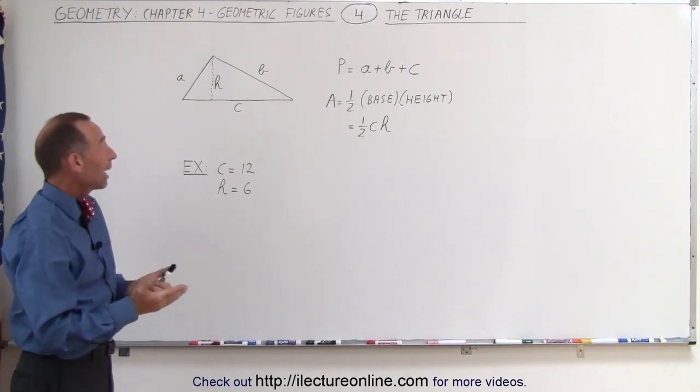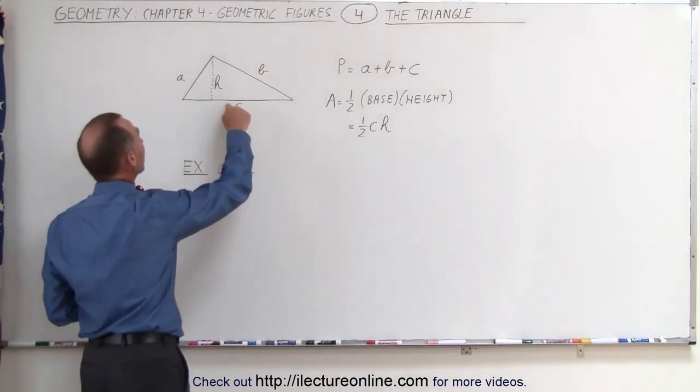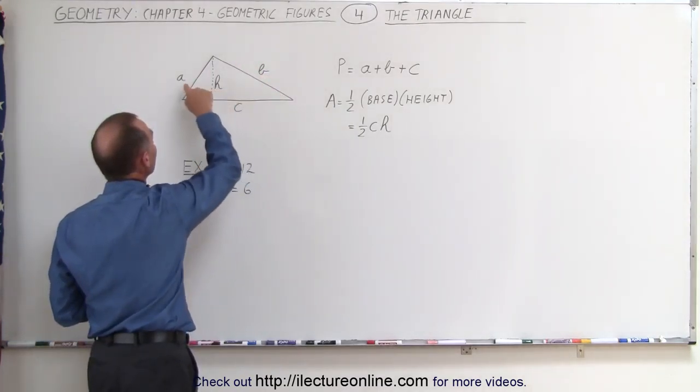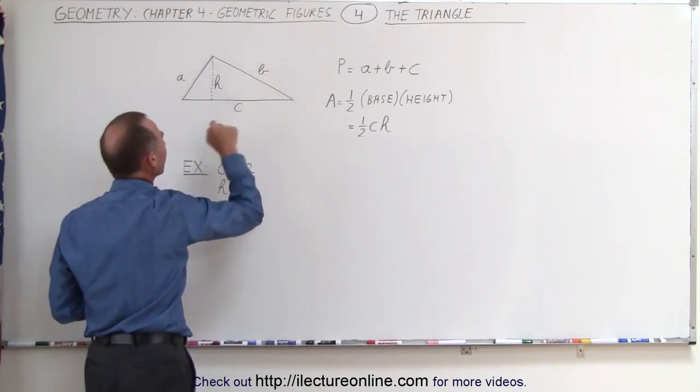To find the perimeter of a triangle, all we have to do is sum up the length of each of the three sides. We label them A, B, and C.